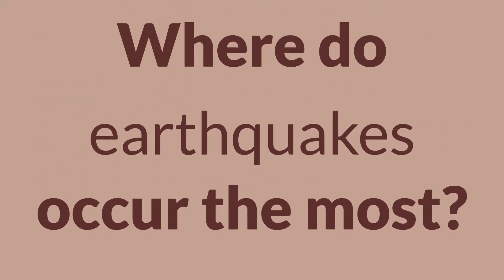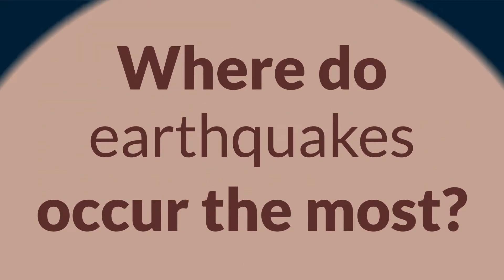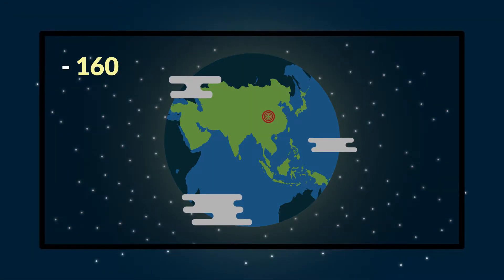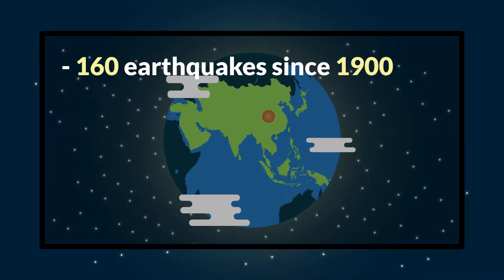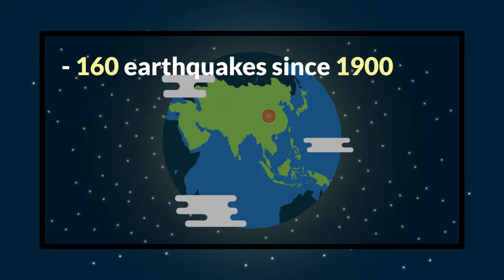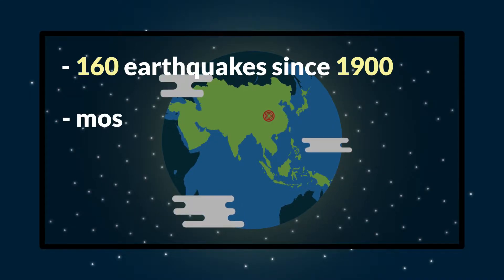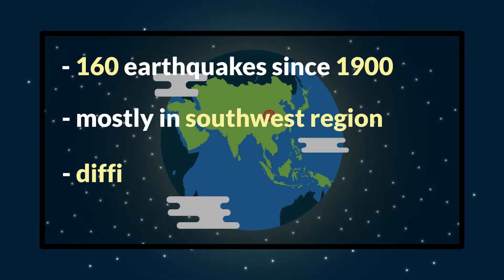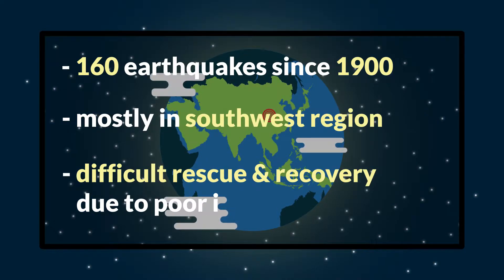Lastly we will look at where the earthquakes strike the most. One of the places that earthquakes love is China. Since 1900 they experienced around 160 earthquakes which is the highest number of any country. Most of these earthquakes happen in the southwest region of the country and the rescue and recovery is very challenging due to poor infrastructure.